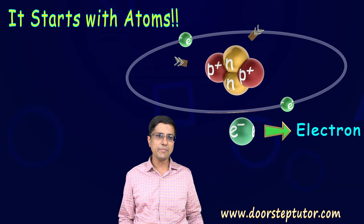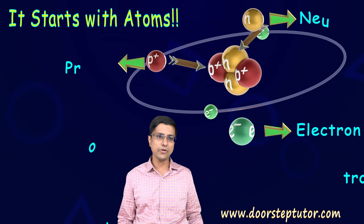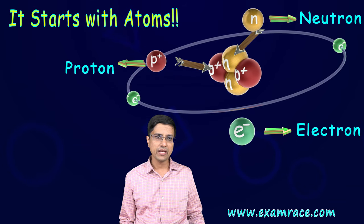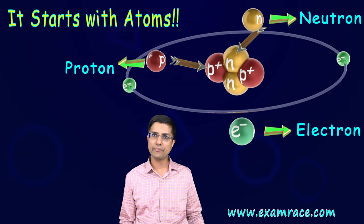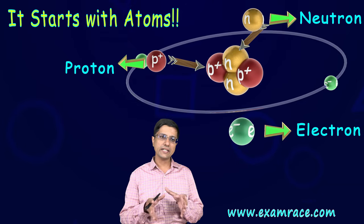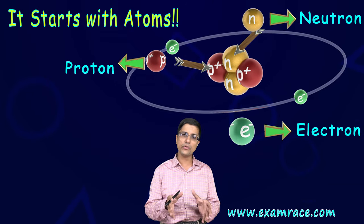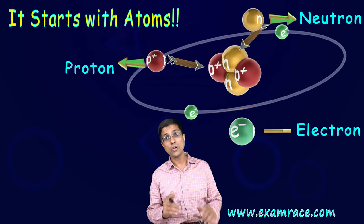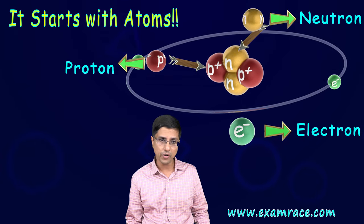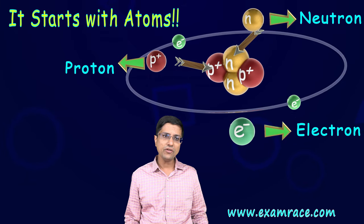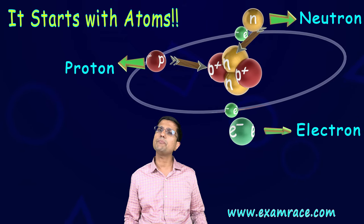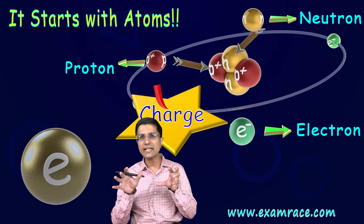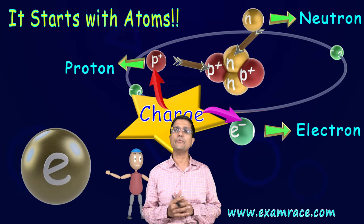The nucleus is made up of neutrons and protons — two other basic particles. The neutrons are not really important from an electricity point of view, but protons are indeed important. These electrons and protons have a very special property which is known as charge. It is a very basic, intrinsic property, just like mass.